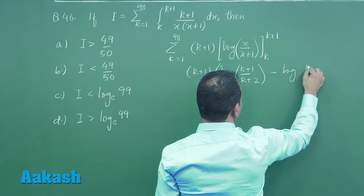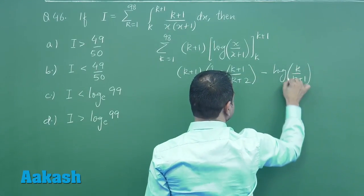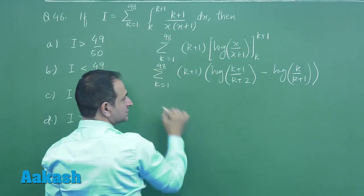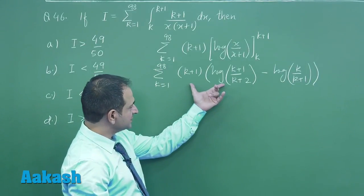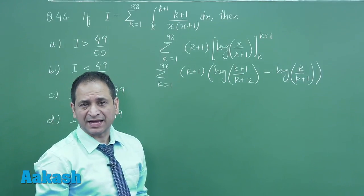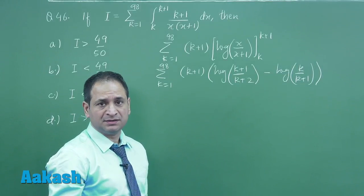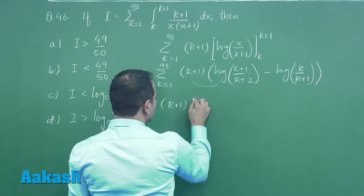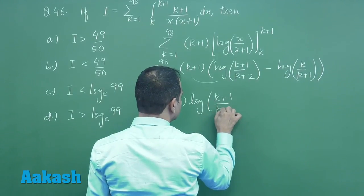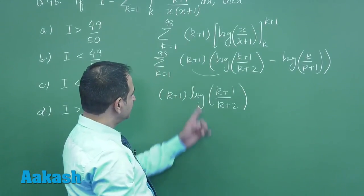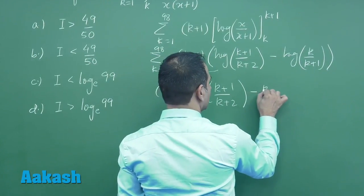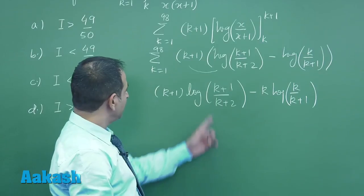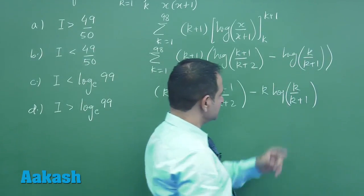Minus log of k upon k plus 1, again summation from k equal to 1 to 98. This will lead to log of k upon k plus 1 from 2 to 98. Now here we are breaking this and applying the difference method. The integration was actually easier; the summation is the main part of this problem. Now if we break this, here we break k plus 1 times log of k plus 1 upon k plus 2, taking k into this part, and 1 into this.